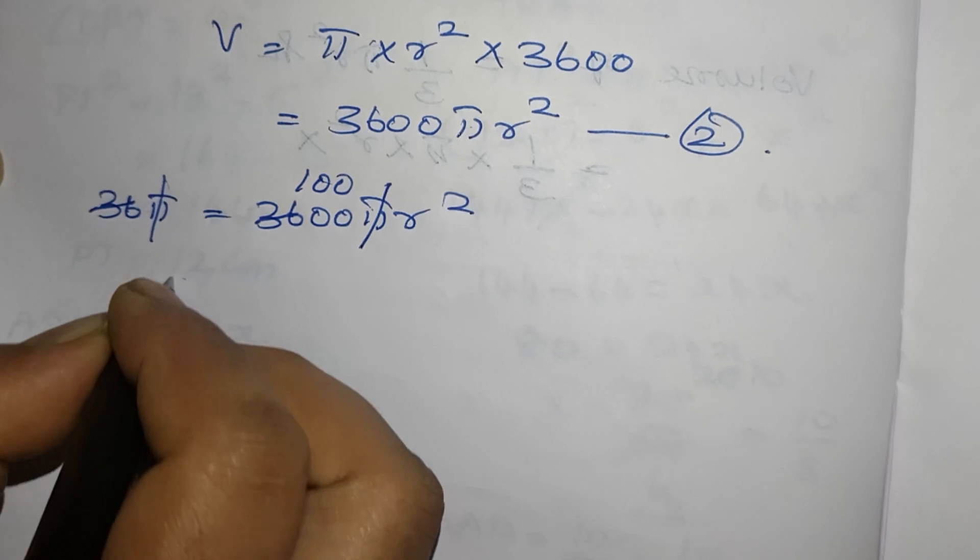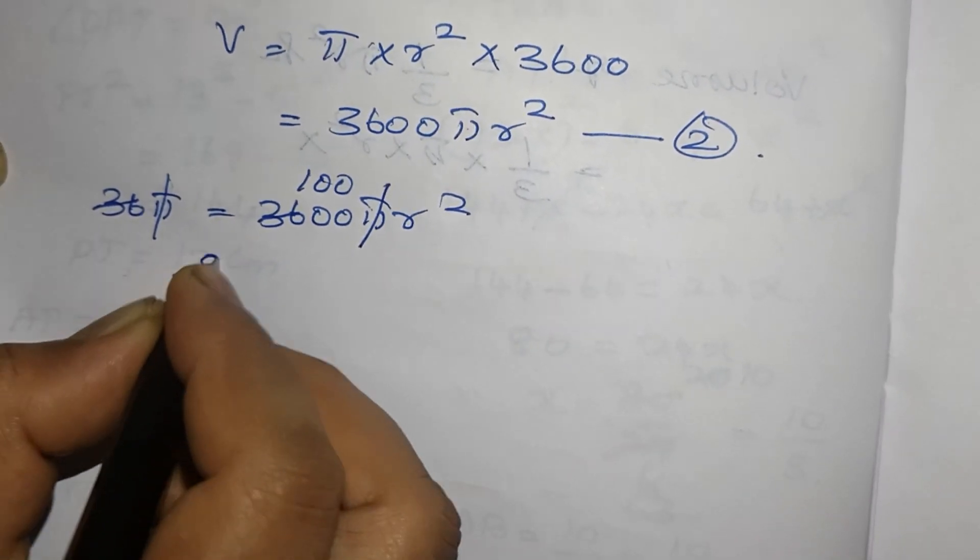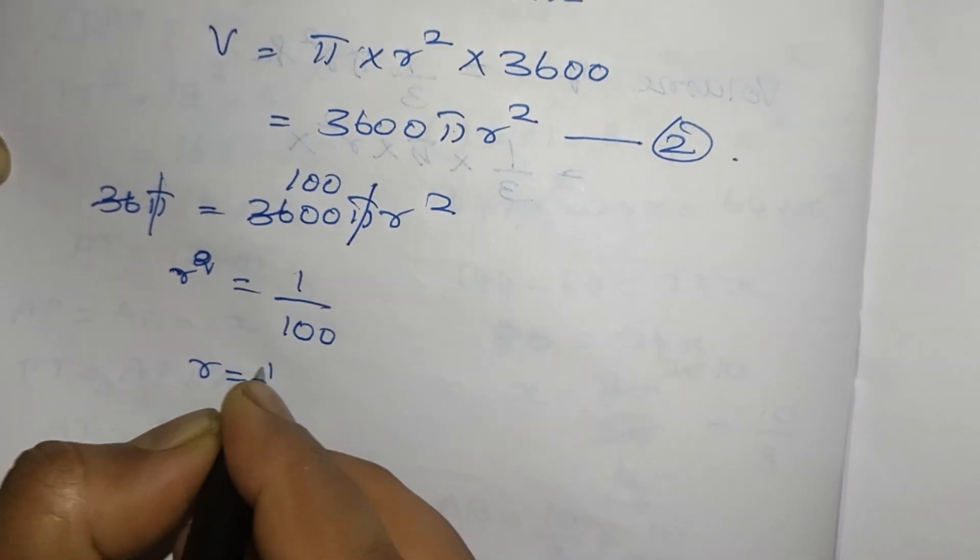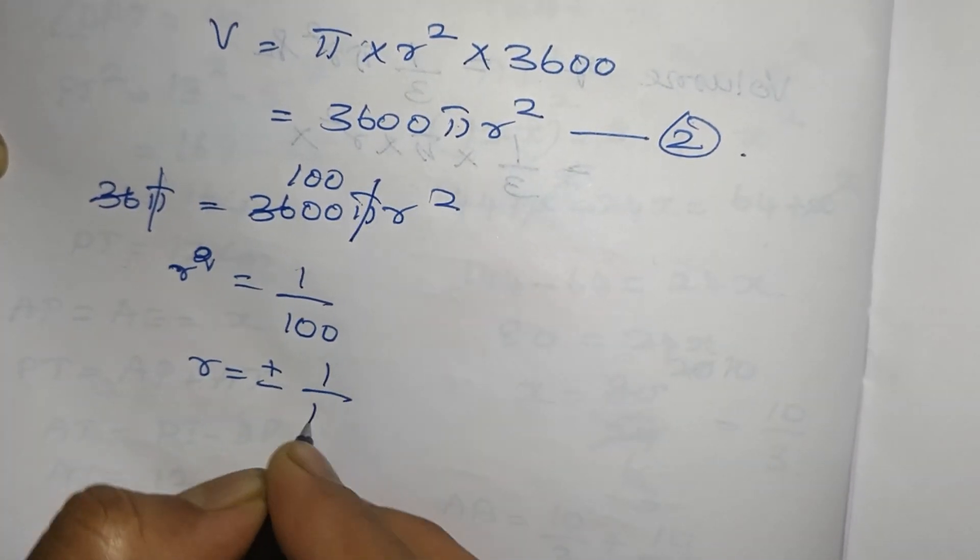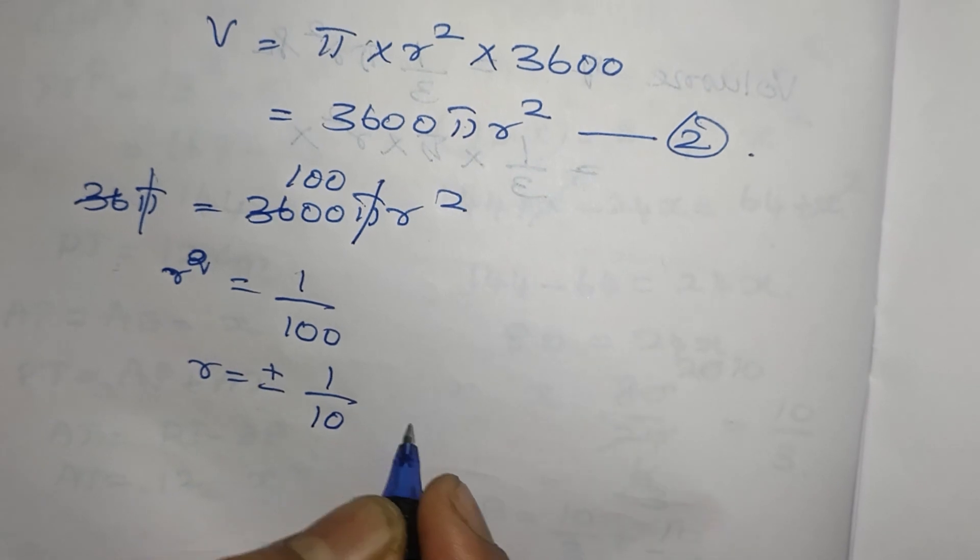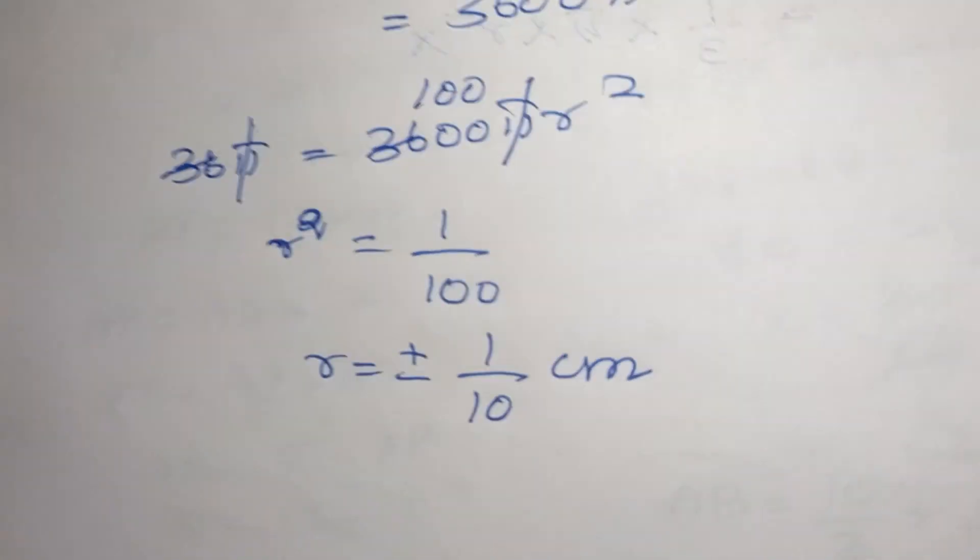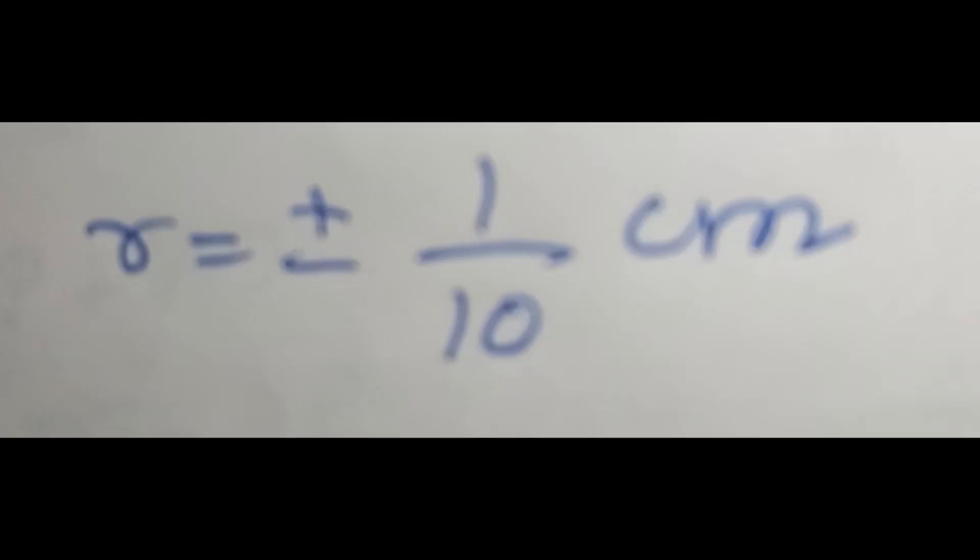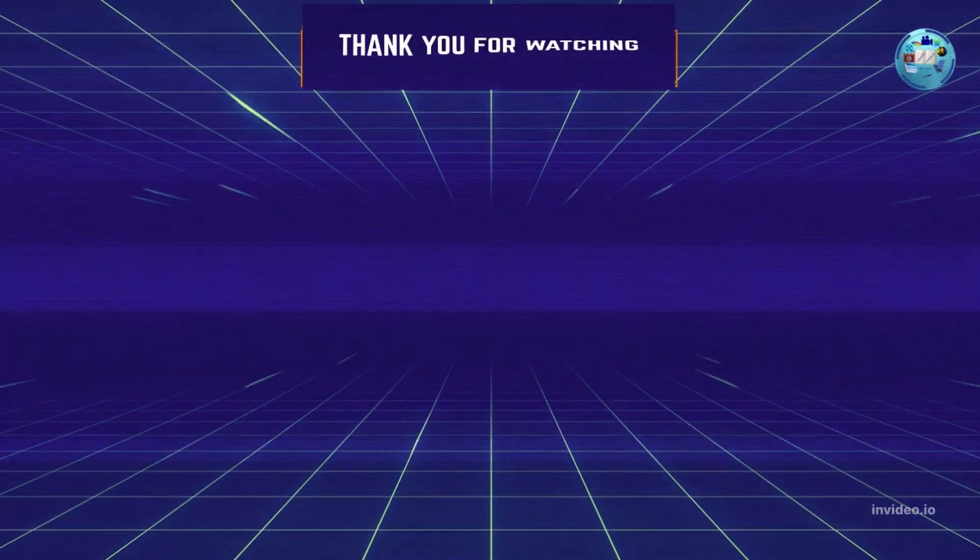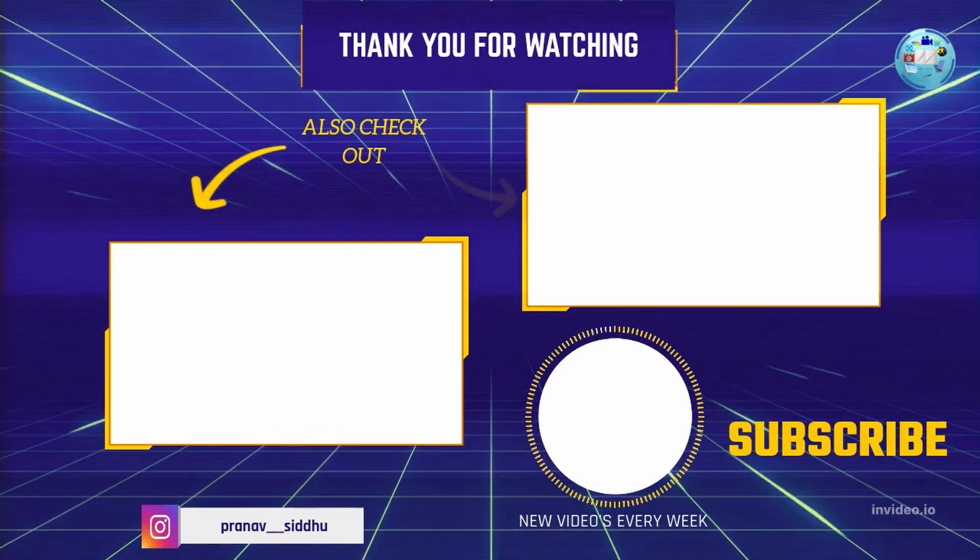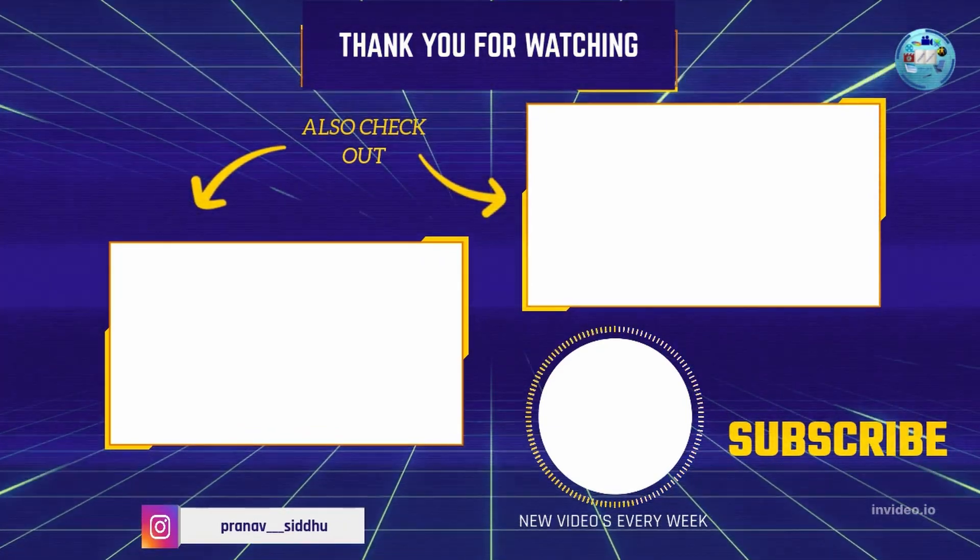So r square equal to 1 by 100 so r equal to plus or minus 1 by 10. R equal to plus or minus 1 by 10 centimeter. R cannot be negative therefore r is positive and we'll see you.